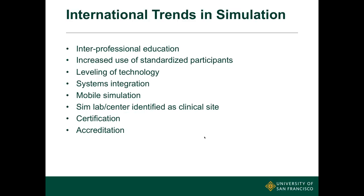Some of the trends we're seeing in simulation internationally are the increase in interprofessional education — allied health professions with nursing and medicine training together, and interprofessional education in hospitals and health systems rather than siloing. Increasing use of standardized participants. Leveling of technology where it's not really about a $100,000 simulator — it's about the methodology of simulation and identifying what type of technology you need to meet your learning objectives. It may just be an office with a standardized participant or an actor. Systems integration — hospitals and health systems are using simulation to identify gaps in their processes, doing root cause analysis, risk simulations, delivering bad news, and tracking patient flow.